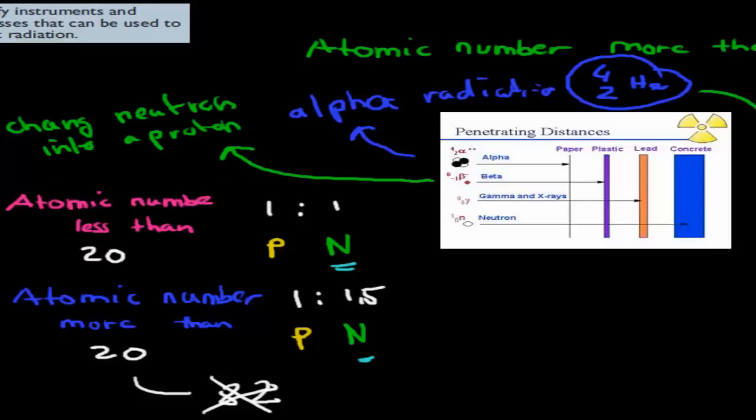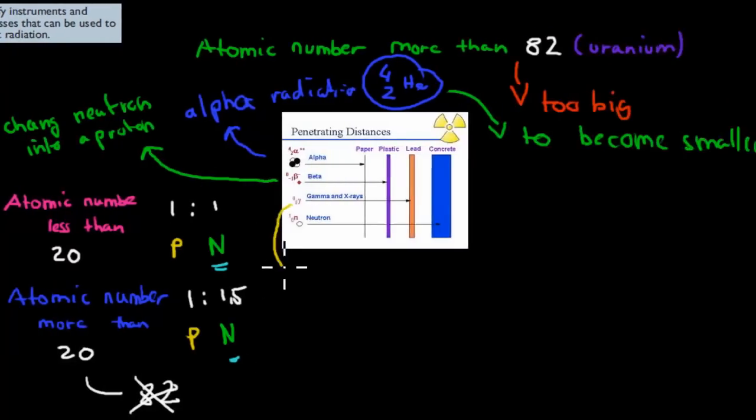And we also have gamma radiation, and the gamma radiation was just that excess energy which is removed in a ray. You can imagine it to be like a sun ray, but just more deadly. This is like a ray. These are the three different types of radiation.